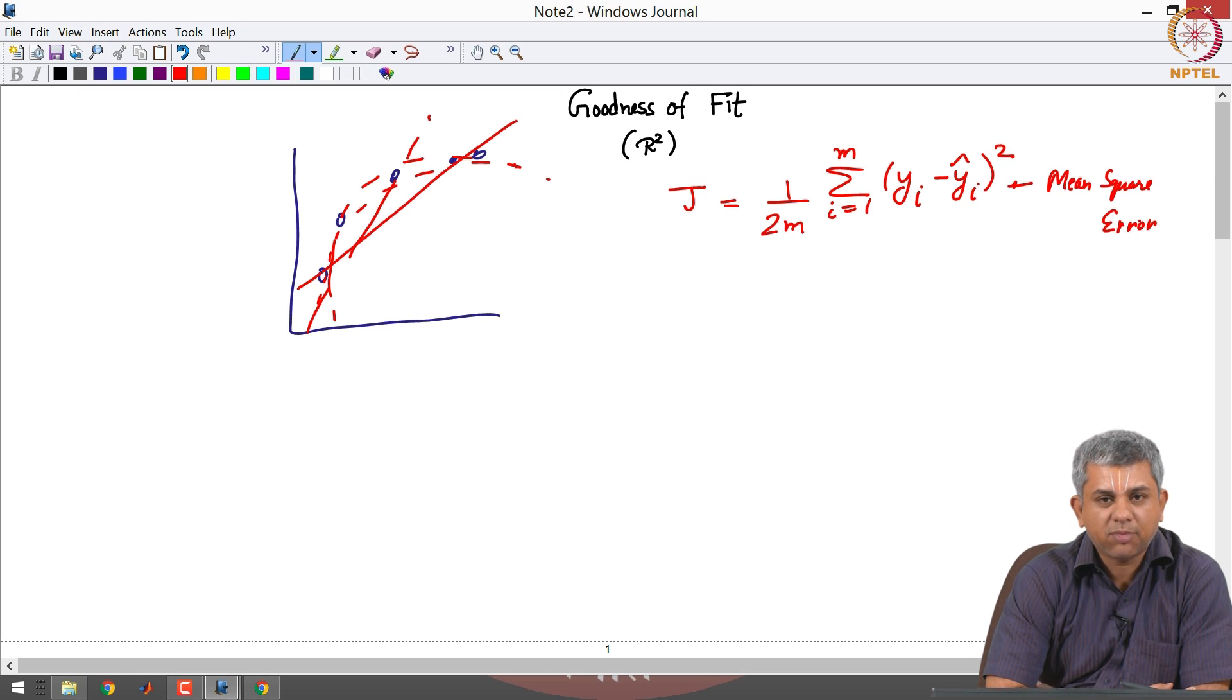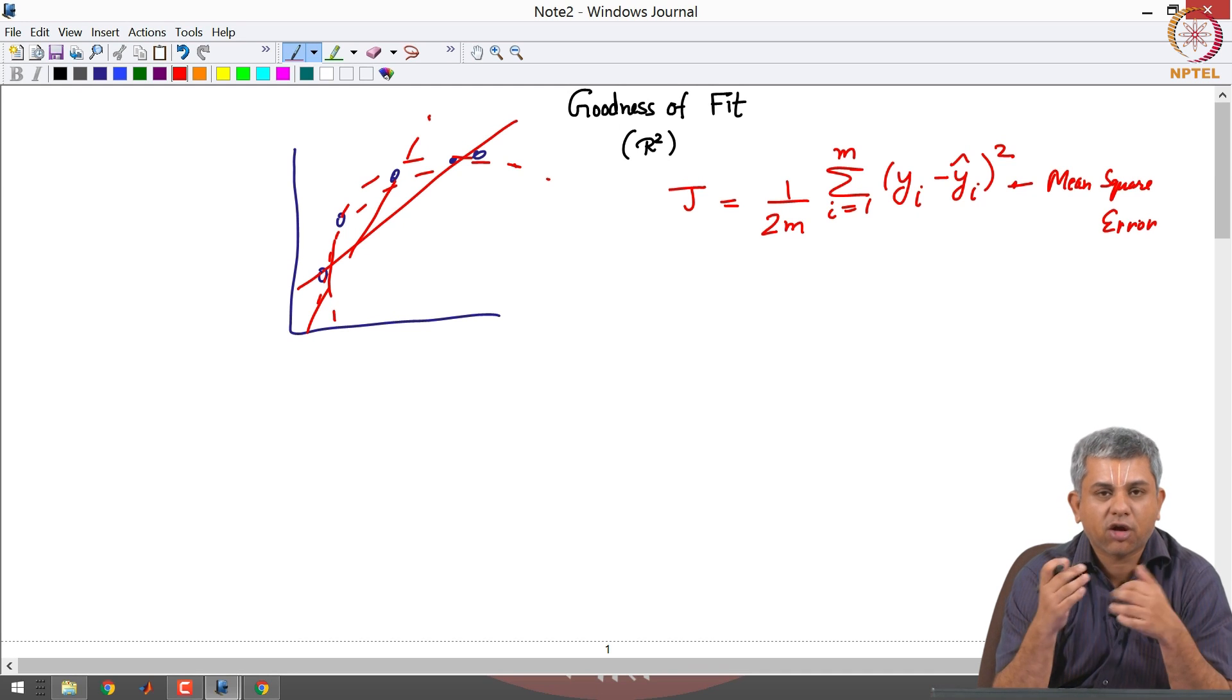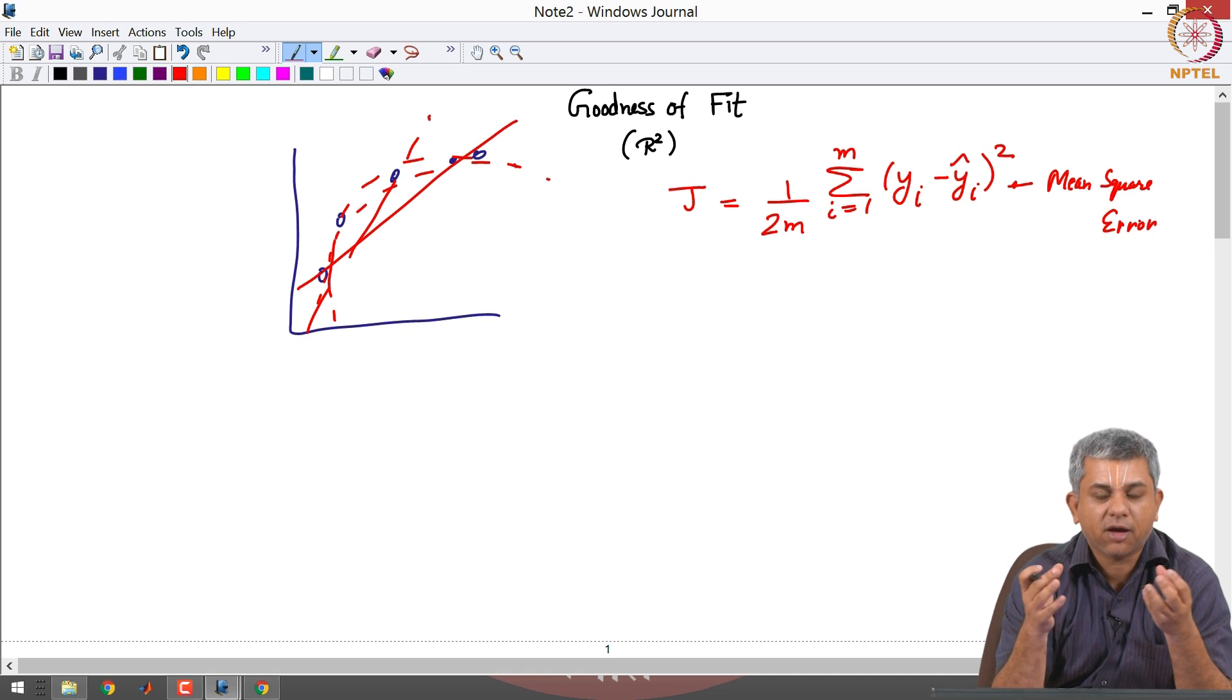Sometimes we just get a large value of J and we do not know whether this is a good fit or not. Typically we would like one number which lies between 0 and 1, where 0 is a really bad fit and 1 is a very good fit. We want to normalize this or non-dimensionalize it with respect to some denominator.